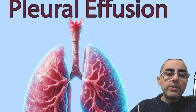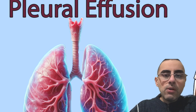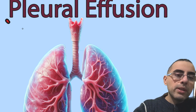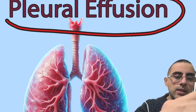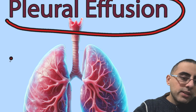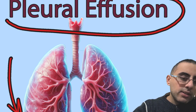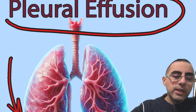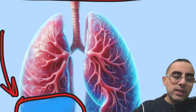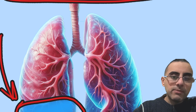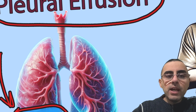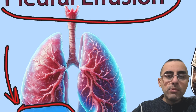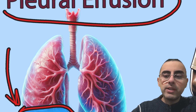We will talk about water on the lungs, or fluid in the lungs — it is called pleural effusion. This fluid should not be here in normal cases, and when it accumulates between the pleural layers, it is called pleural effusion. We will discuss the most common symptoms and most common causes of pleural effusion.